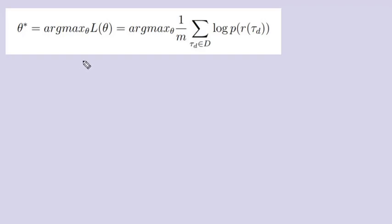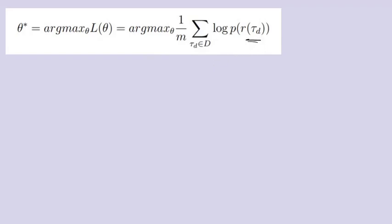Hey guys, this is the second part of Maximum Entropy Inverse Reinforcement Learning. In the first part we got to the point where we defined the objective, where we want to maximize the log likelihood of the probabilistic distributions of the human expert trajectories. Now we are going to solve this, as I promised in the last video.